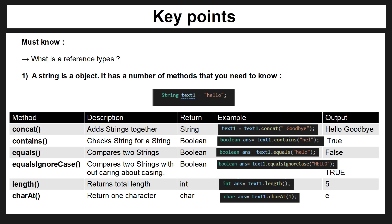The length method returns an int and tells you how many characters are in that variable. For example, the variable "hello" has five characters so the total length would be five. This will be very useful when you're doing things like loops, and it's another important one for the MTA exam.